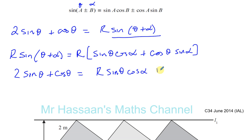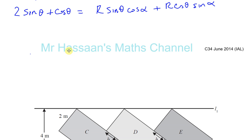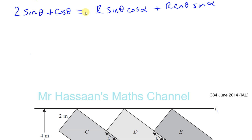Now what we need to do is compare the two sides that we have here. If you look at the sine theta on the left-hand side and the sine theta on the right-hand side — this is an identity; these two things are actually identical to each other. The coefficient of sine theta on the left side is 2, and on the right side you have R cosine alpha times sine theta. So R cosine alpha equals 2.